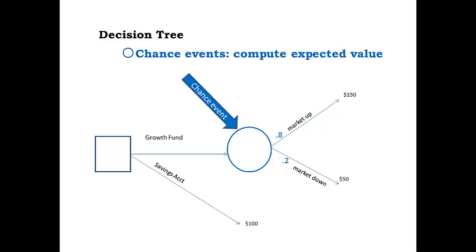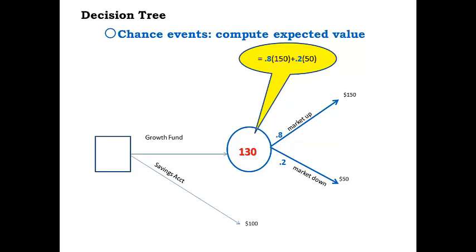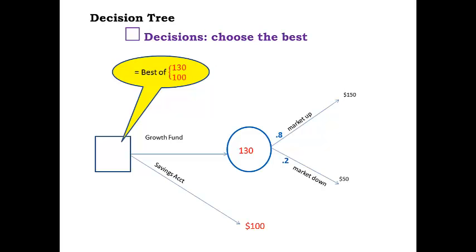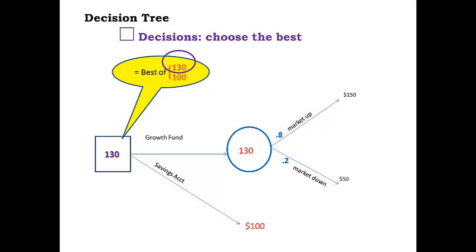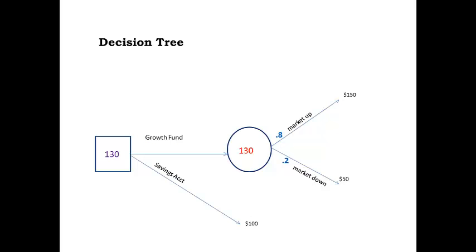For our example tree, solving from right to left, we first solve the chance of the market going up or down. Since it is a chance event represented by a circle, we compute the expected value for the growth fund: $130, equal to 80% × 150 + 20% × 50. Moving back to the decision square between the growth fund and savings account, we choose the best — the expected $130 from the growth fund. The best risk-neutral decision is to invest in the growth fund and take a chance on whether it will pay off $150 or $50.